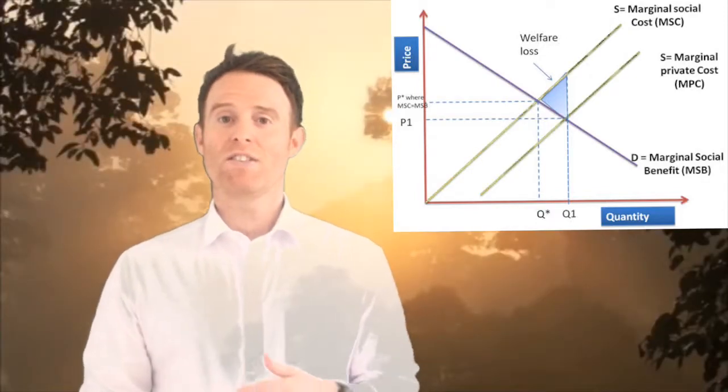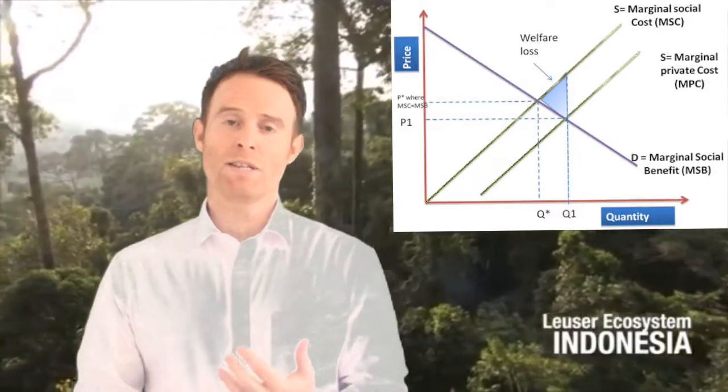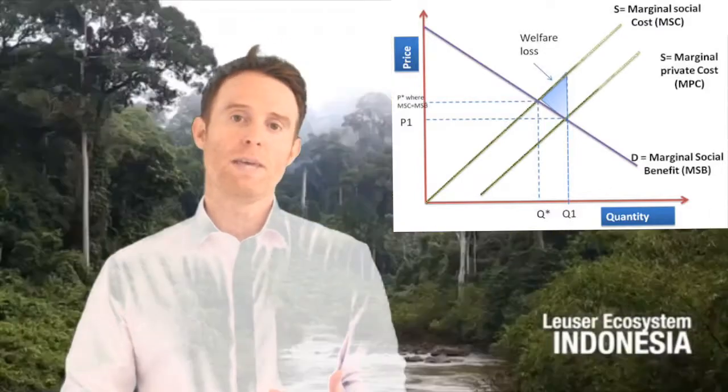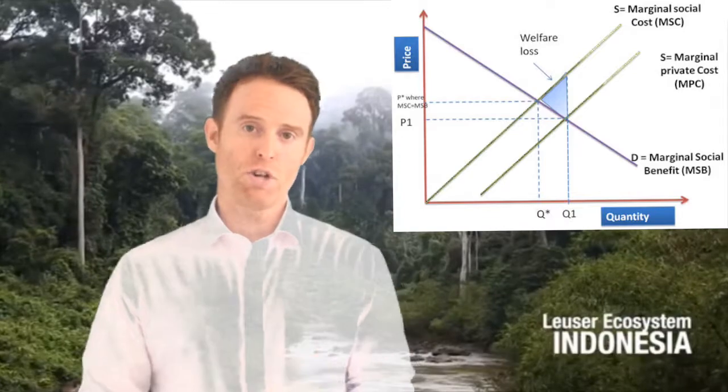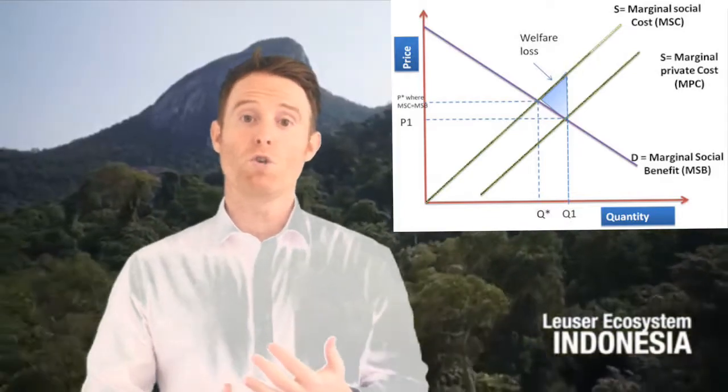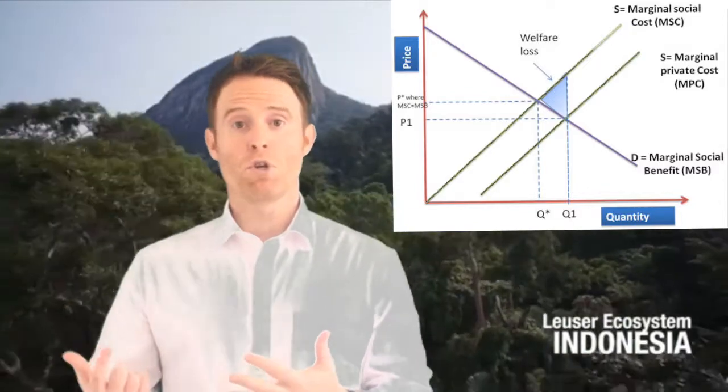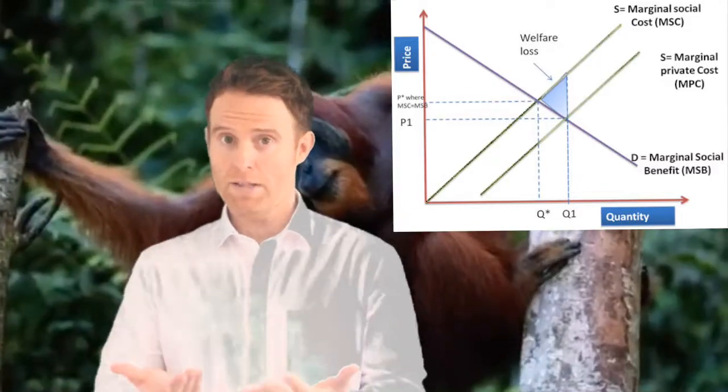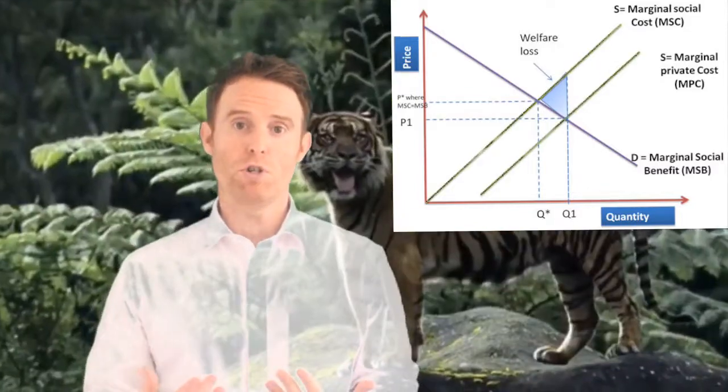So in terms of looking at the diagram and we look at the negative externalities diagram, it's important to know the axis to start off with. So the vertical axis, when you should be drawing it, you should be looking at the cost, the benefits and the price. When you're looking at the horizontal axis, you should be considering the quantity of palm oil and how much is being produced.